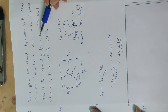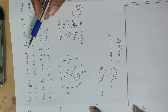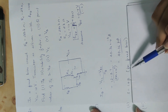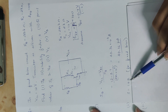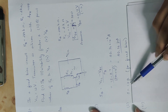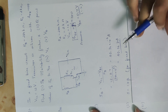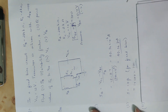The stability factor is S. For a fixed bias circuit, the equation is S equals 1 plus beta. You can learn this by heart: for a fixed bias circuit, S equals 1 plus beta. Substituting beta equals 100, S equals 101. That is the stability factor.